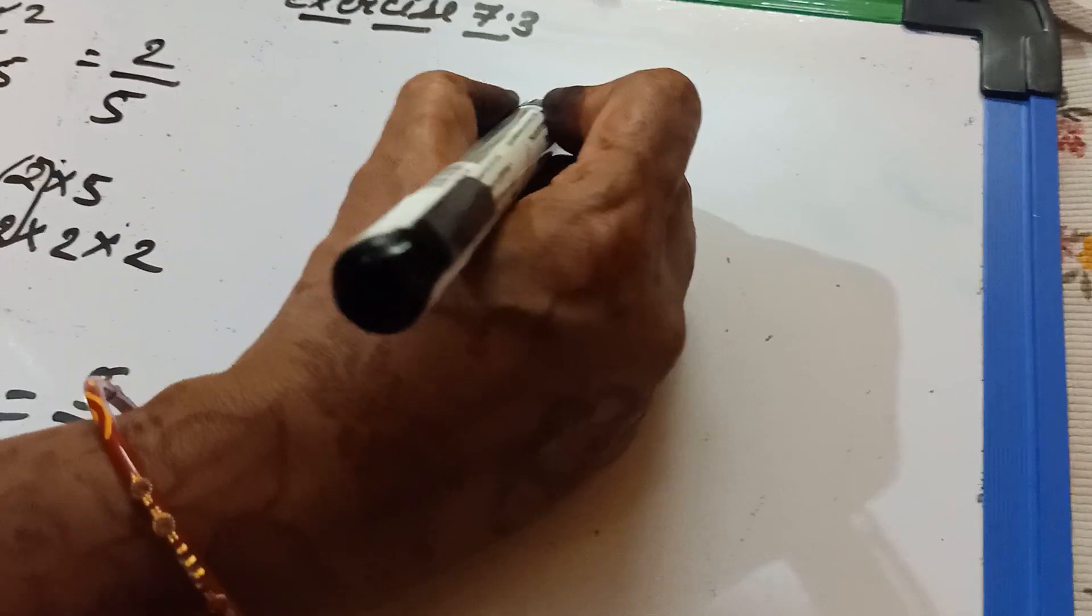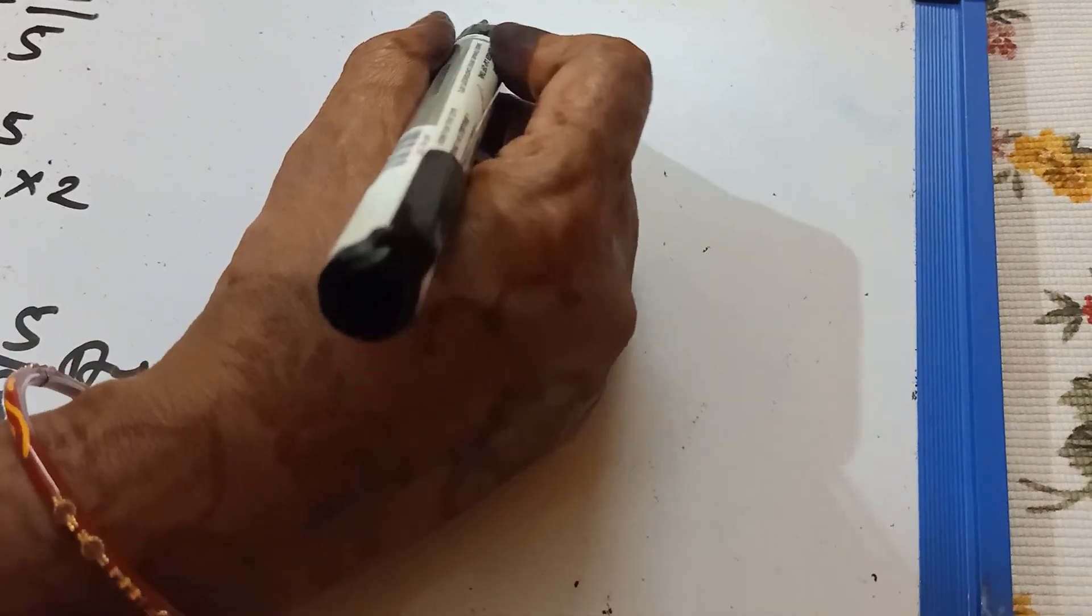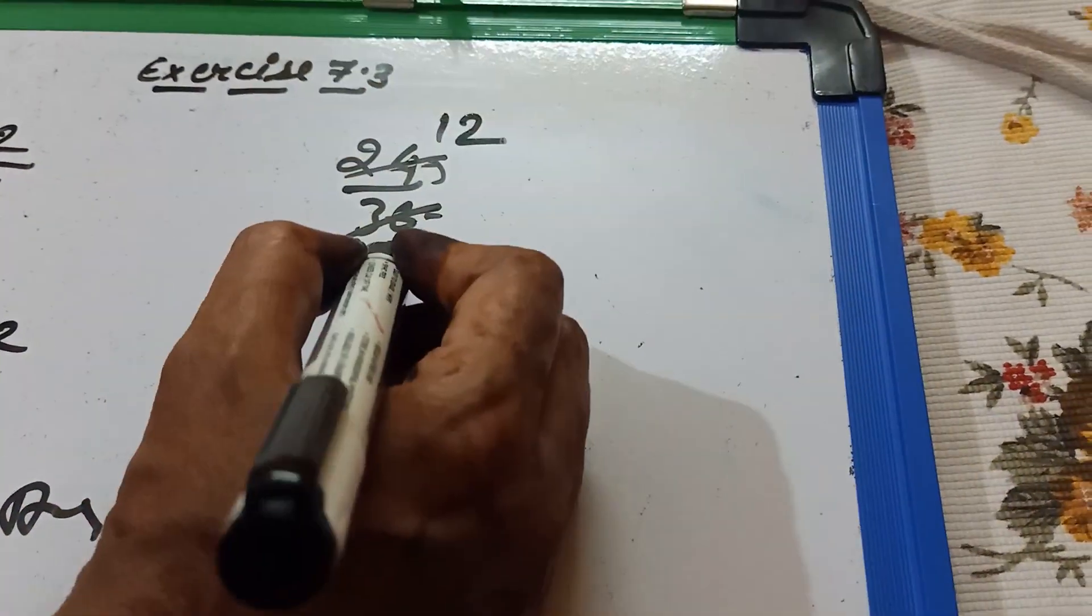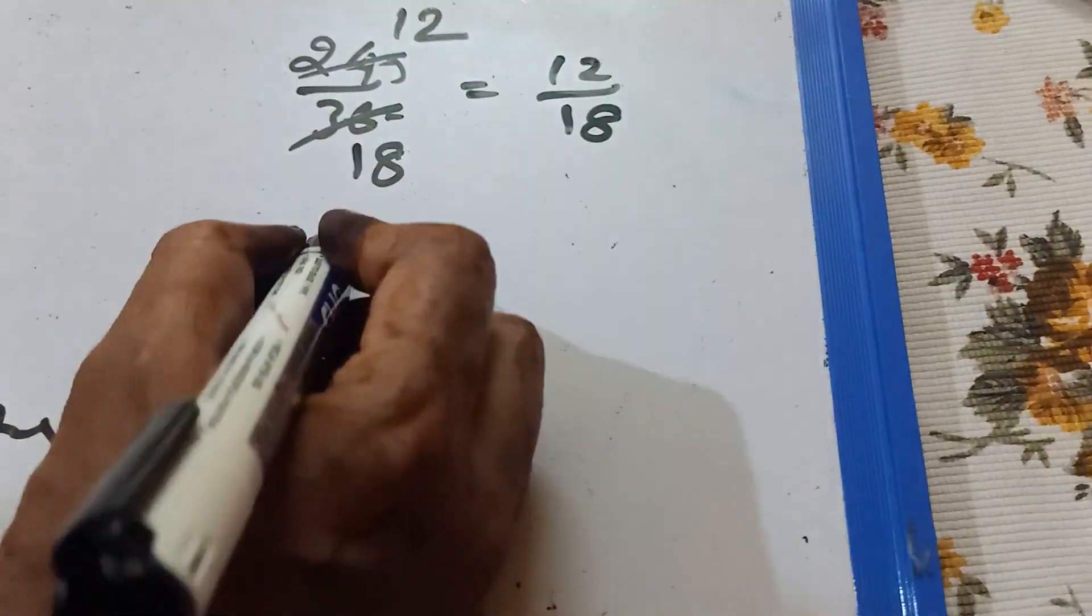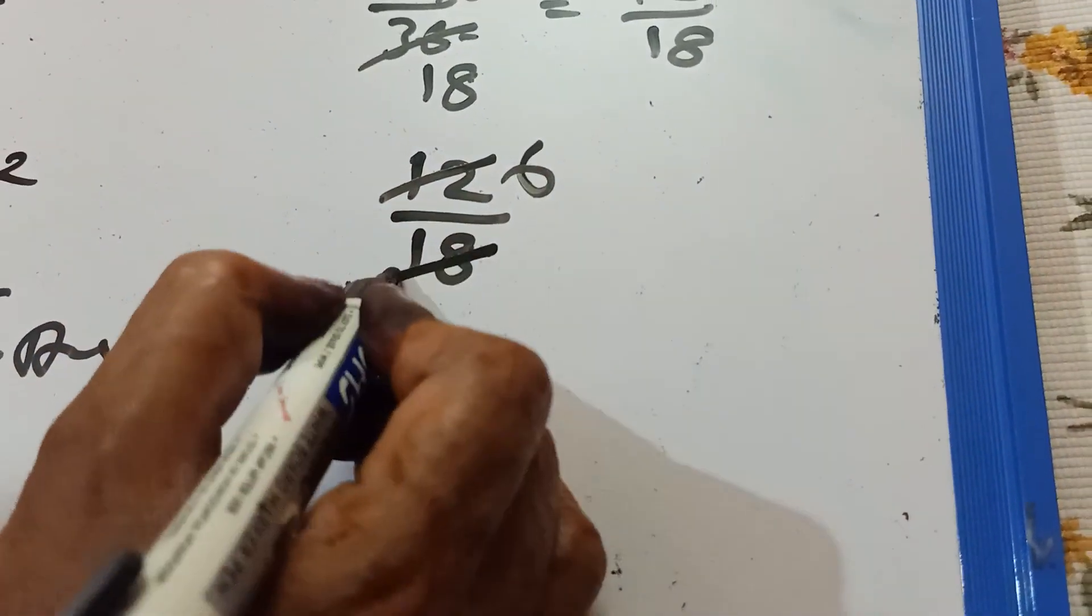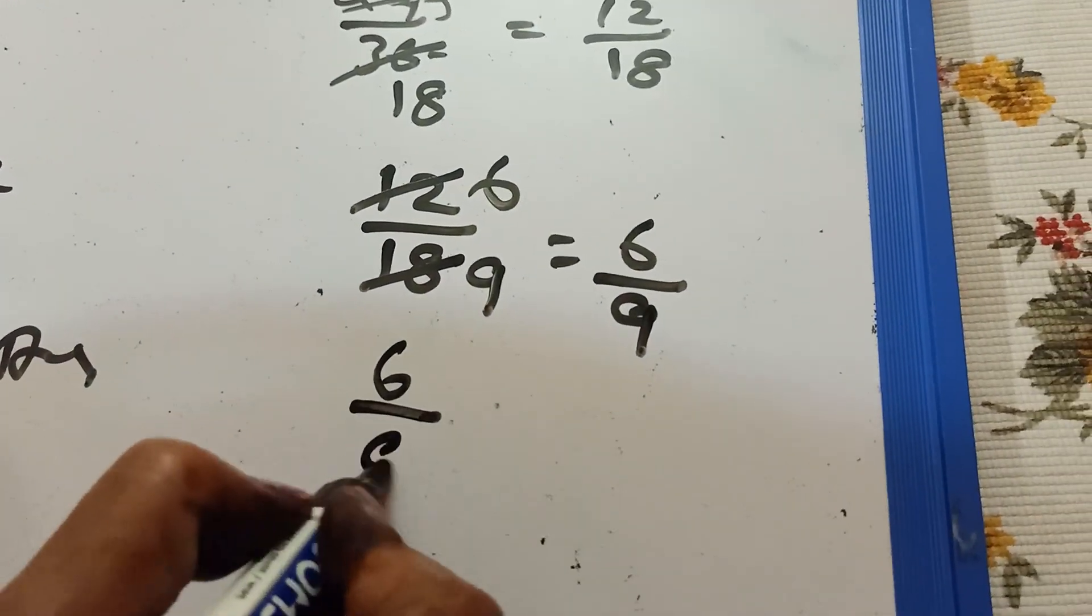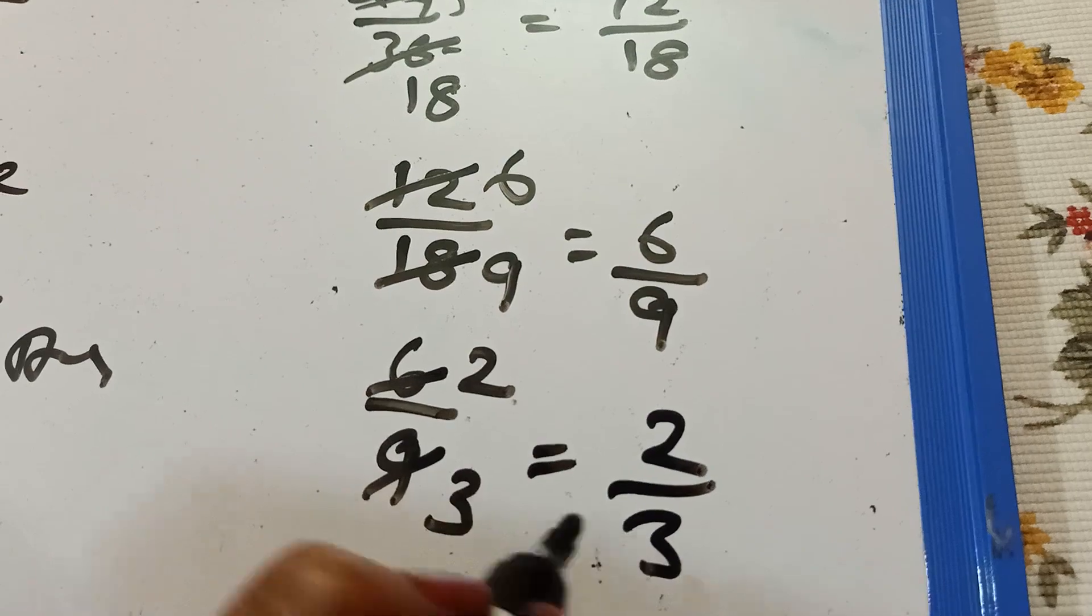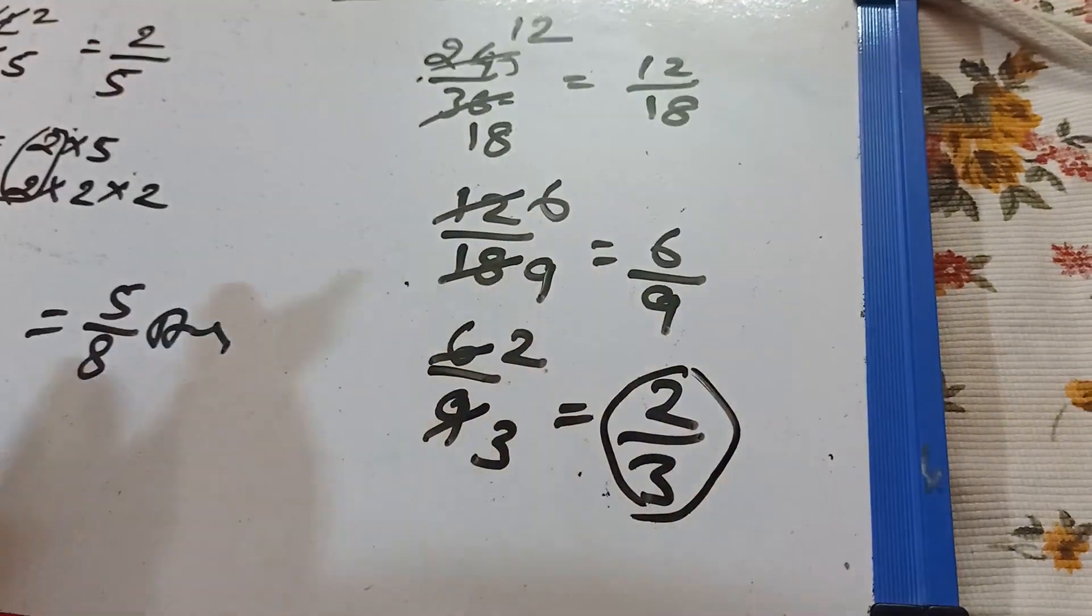Suppose I am taking a number 24 by 36. Are you seeing the even number in last? Blindly we divide with 2. It is 12 by 18. In first step it is 12 by 18. In second step 12 by 18 we divide by 2. 2 sixes are 12. 2 nines are 18. It is 6 by 9. And third step we will take 6 by 9 divided by 3. 3 twos are 6. 3 threes are 9. It is 2 by 3. So it is the lowest term of 24 by 36.